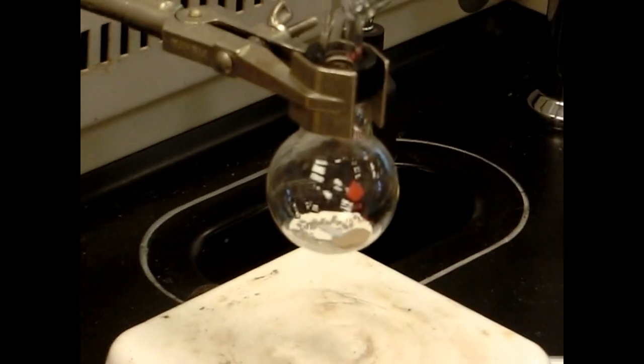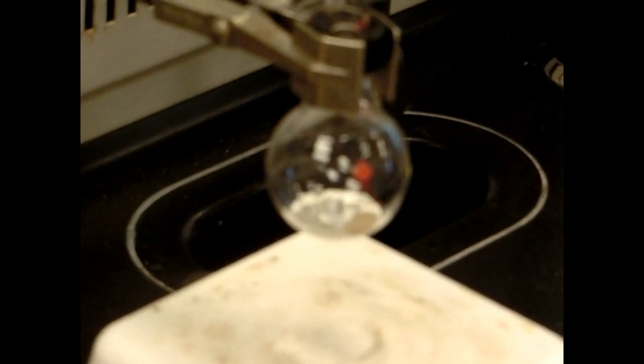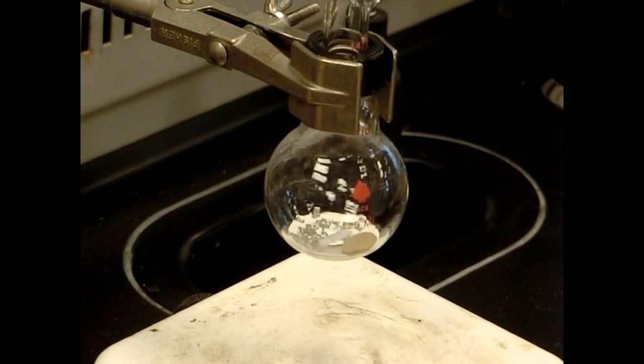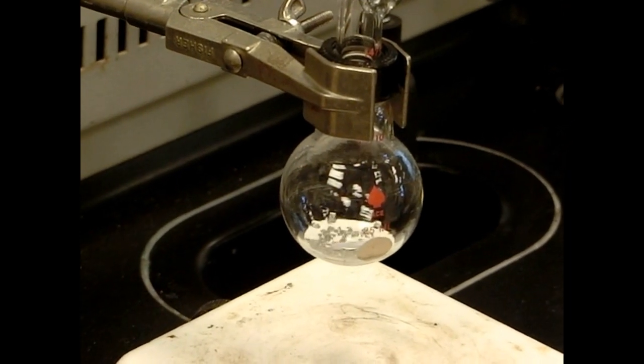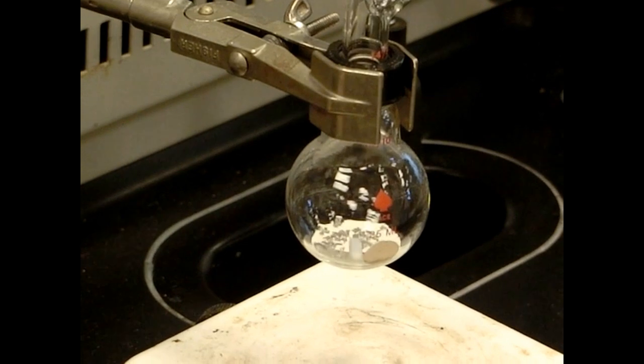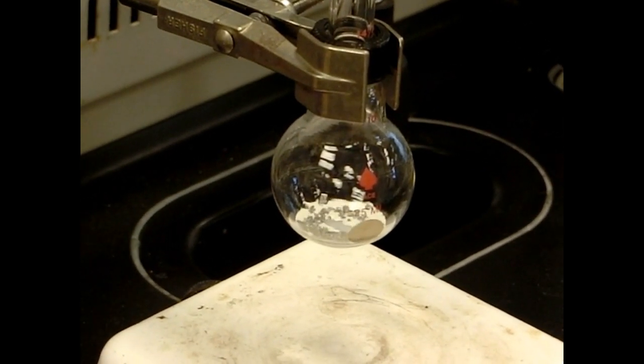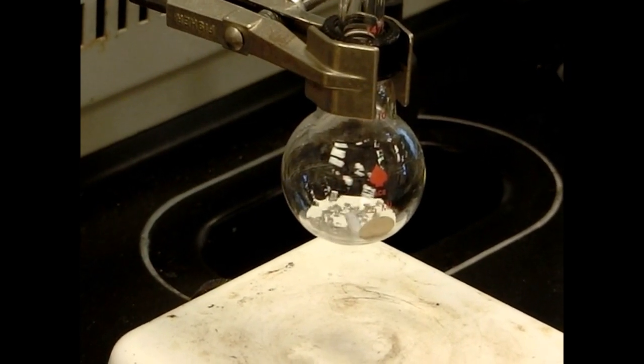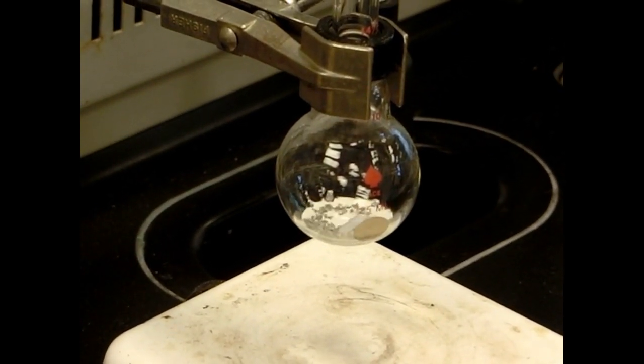Now at this point, what we're waiting for over time is the solution should turn a little bit cloudy and a little bit of a light brown color. The more intense brown it gets, the more Grignard that we're making. Again, this could take anywhere from about 15 minutes to about two hours. It can be a very slow reaction. So for now, we'll wait and hope for the best.